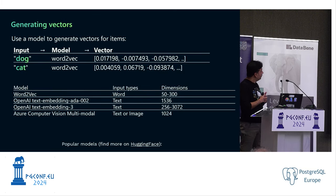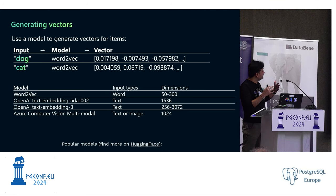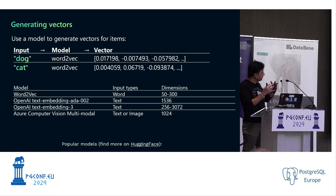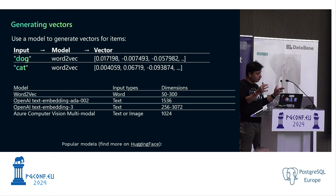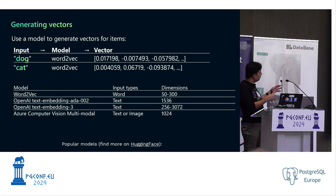One way to generate vectors is using any kind of vectorization model. As an example, I'm showing word2vec — a very old model. If you feed in 'dog,' you get a specific vector generated; for 'cat,' a different vector is generated.